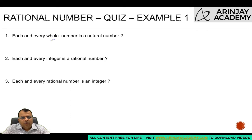Each and every whole number is a natural number. Is this statement correct? We know what whole numbers are. Whole numbers are 0, 1, 2, 3 and so on. Natural numbers are 1, 2, 3 and so on. Now whole numbers include zero, but natural numbers don't include zero. What does this mean? That all whole numbers are not necessarily natural numbers. Therefore this statement is false.